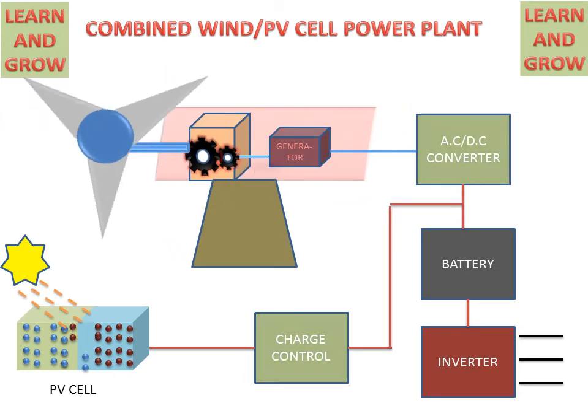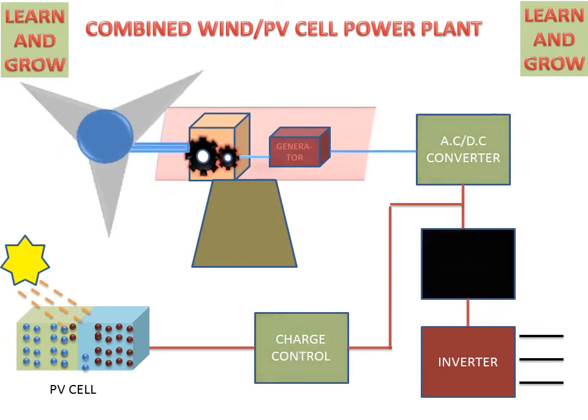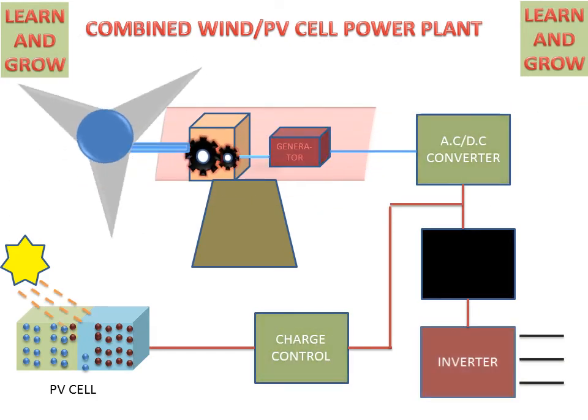Then AC-DC converter and charge controller give energy to the battery for storage. And this battery is attached to the inverter. And this energy can be used as required. So this is the working of combined wind PV cell power plant.